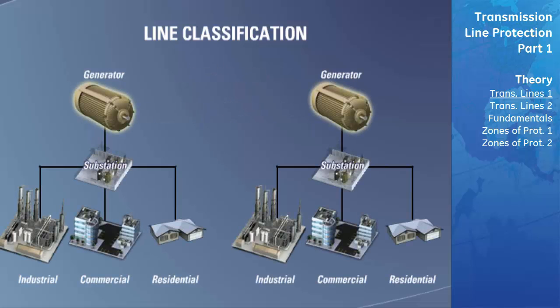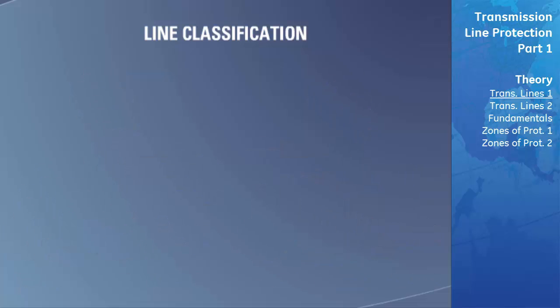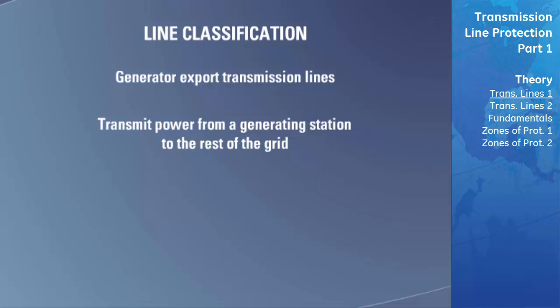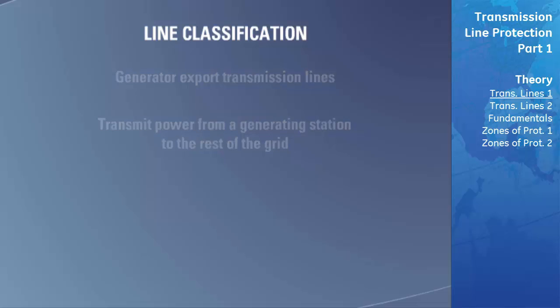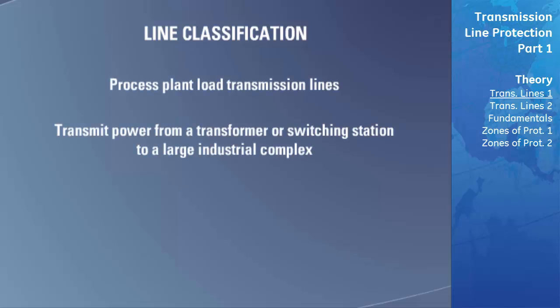Interconnector transmission lines are used to connect one section of a power system to another. Generator export transmission lines are used to transmit power from a generating station to the rest of the grid. Process plant load transmission lines are used to transmit power from transformers or switching stations to large industrial complexes.